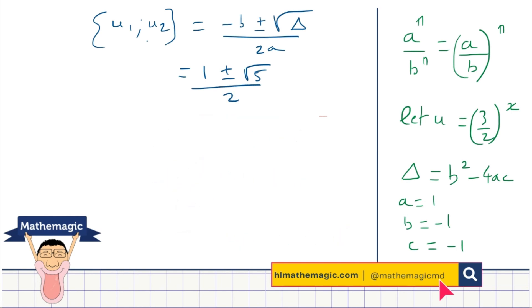And we have to remember that u is equal to 3 over 2 to the power x. Being an exponential function, 3 over 2 to the power x is strictly positive. And you notice that in your two solutions, 1 minus root 5 divided by 2, that will be a negative value. So this solution is rejected. We cannot accept a negative value. The only value of u which we will accept is the positive value, which is u equal 1 plus root 5 divided by 2.